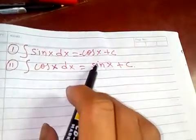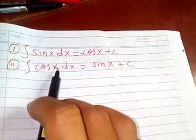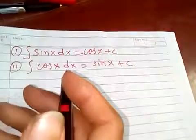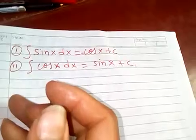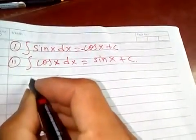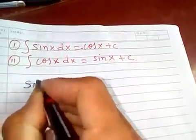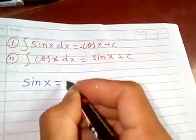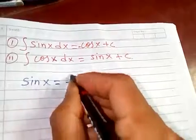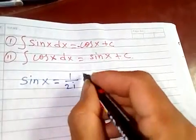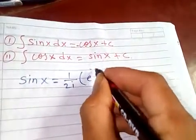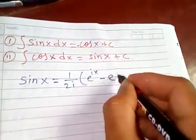But I'm going to use another method using Euler's formula. From Euler we know sin(x) = 1/(2i)(e^(ix) - e^(-ix)). This is Euler's formula for sine.